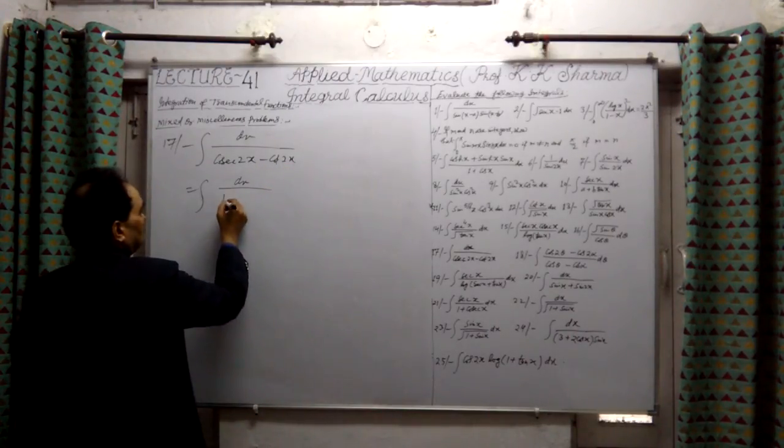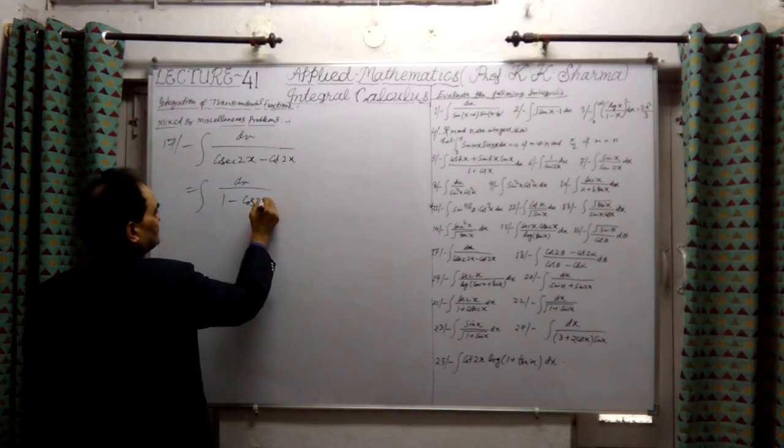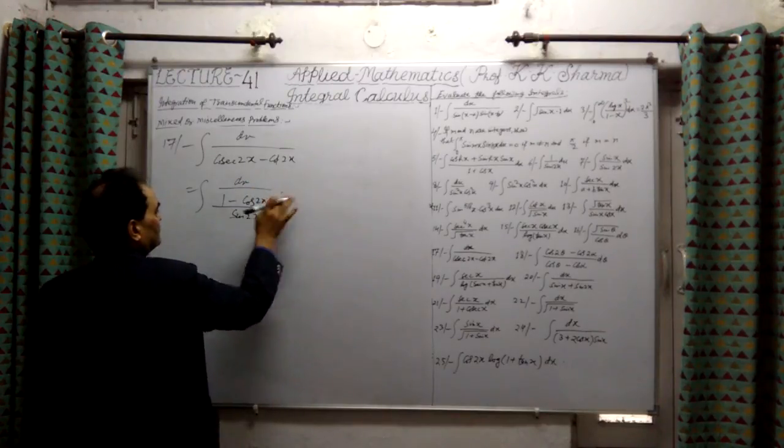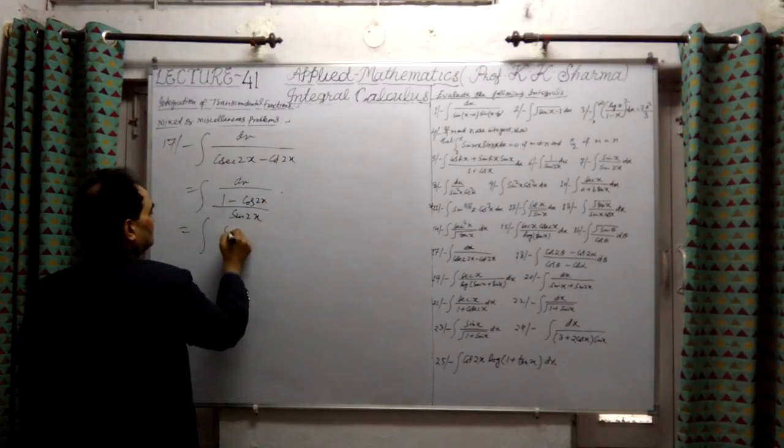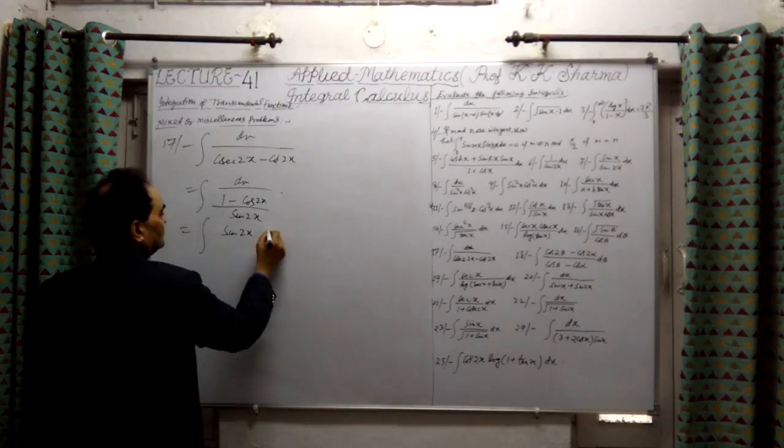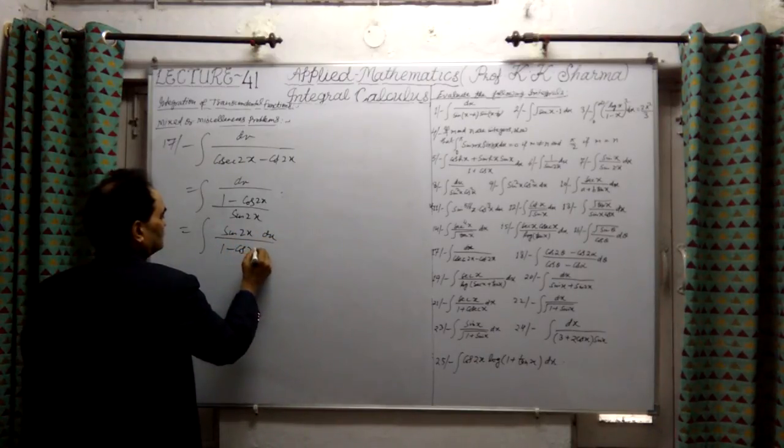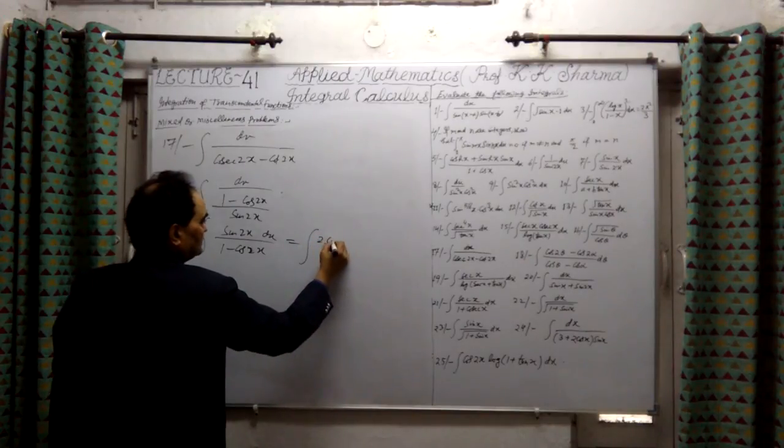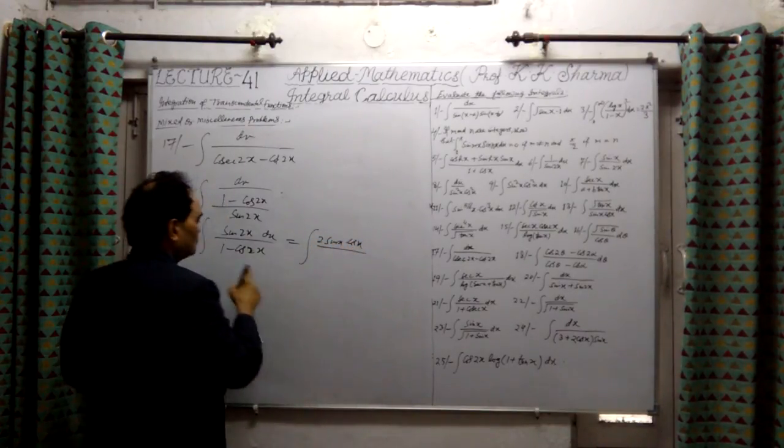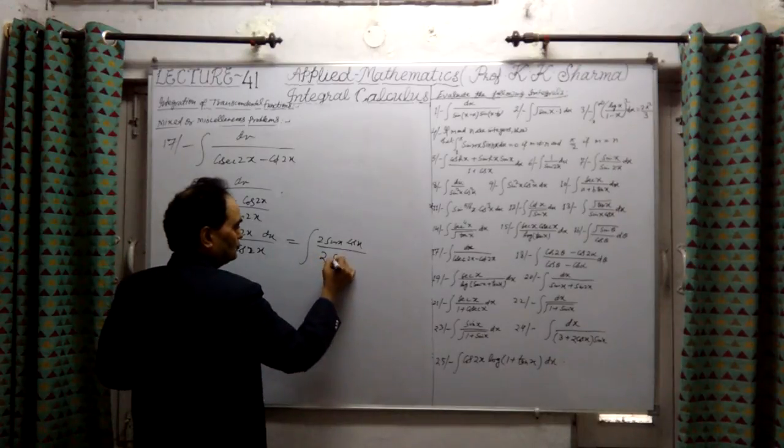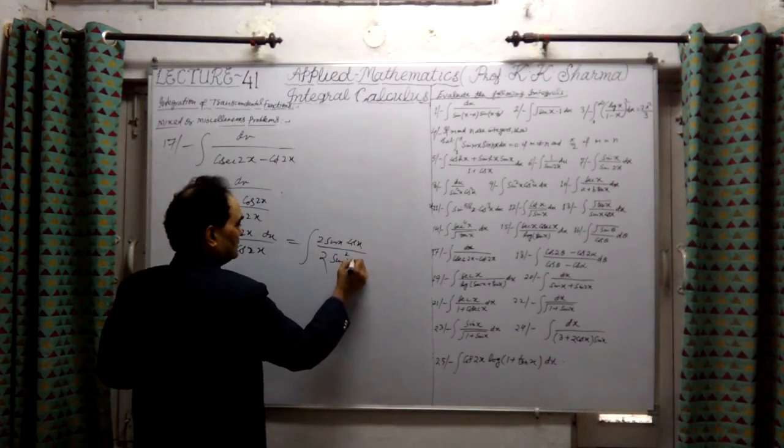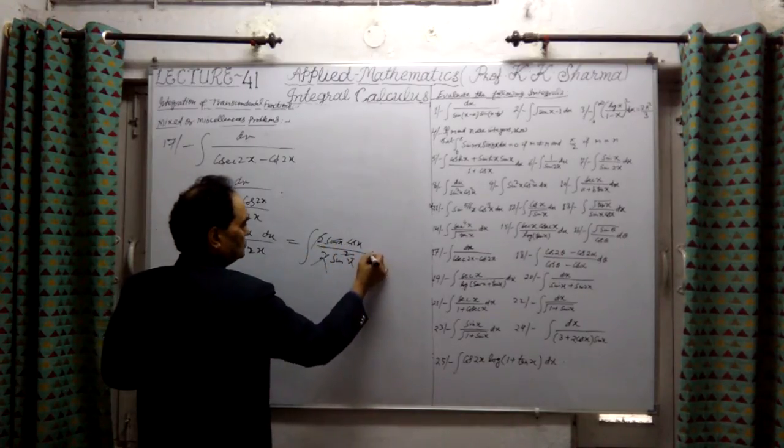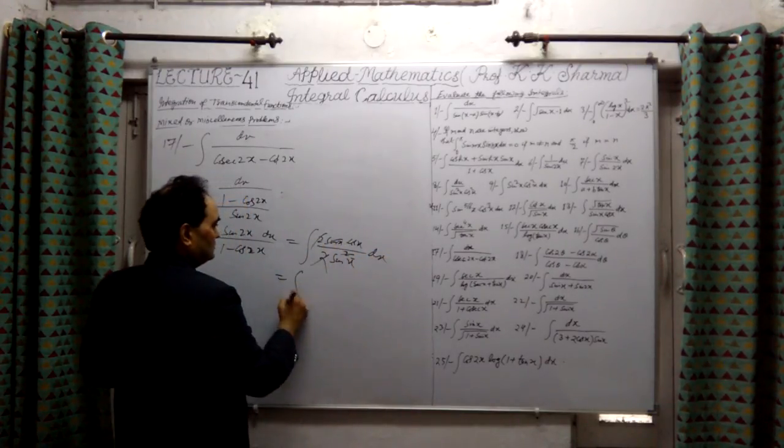Divided by 1 minus cos 2x by sin 2x is nothing but sin 2x upon 1 minus cos 2x is 2 sin squared x only. So 1 by sin 2x is nothing but sin 2x, it is nothing but x.